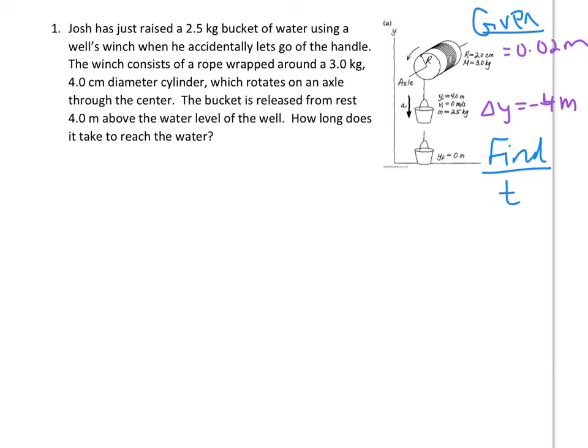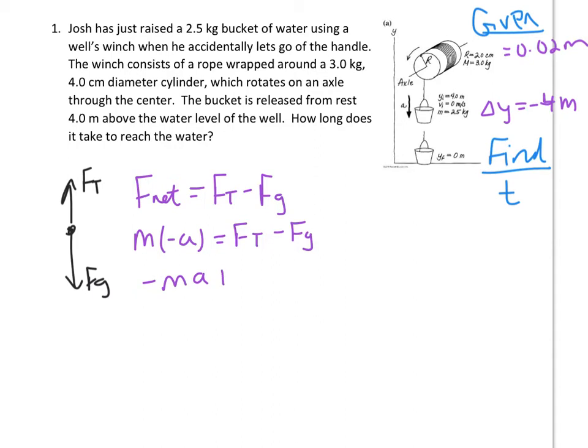Let's start with the bucket. If I draw a force diagram for the bucket, it's got its weight and the tension force. We know that tension is shorter than the weight because this bucket is accelerating downward so the downward force has to be larger. Net force is going to equal top minus bottom, so Ft minus Fg equals mass times acceleration. This acceleration is negative because it's getting faster in the negative direction. So mass times negative acceleration equals Ft minus Fg. Negative ma plus mg equals Ft.